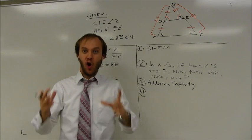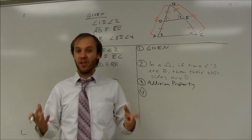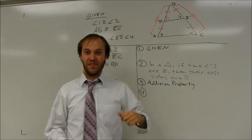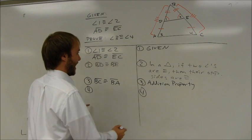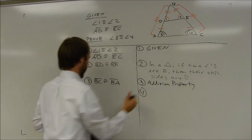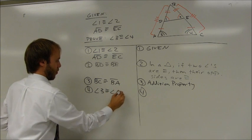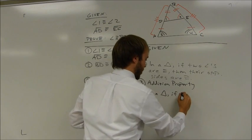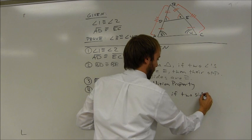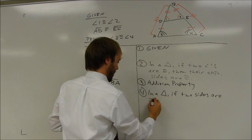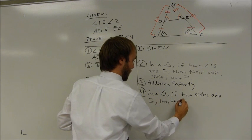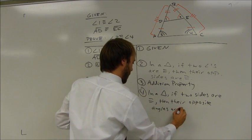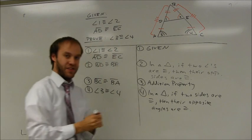Now, this is an isosceles triangle — the large triangle is isosceles. I'm not going to use the wording that it's an isosceles triangle because that would take me an extra step. I'm going to go straight to the theorem that says if two sides of a triangle are congruent, then the opposite angles are congruent. And that's going to tell me that angle 3 is congruent to angle 4. In a triangle, if two sides are congruent, then their opposite angles are congruent. And this proof is done.